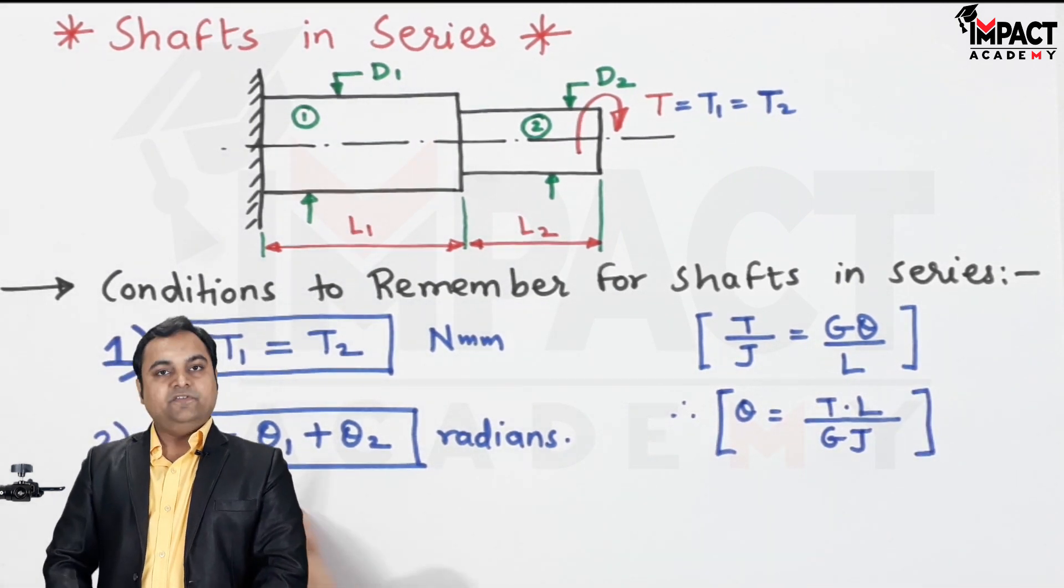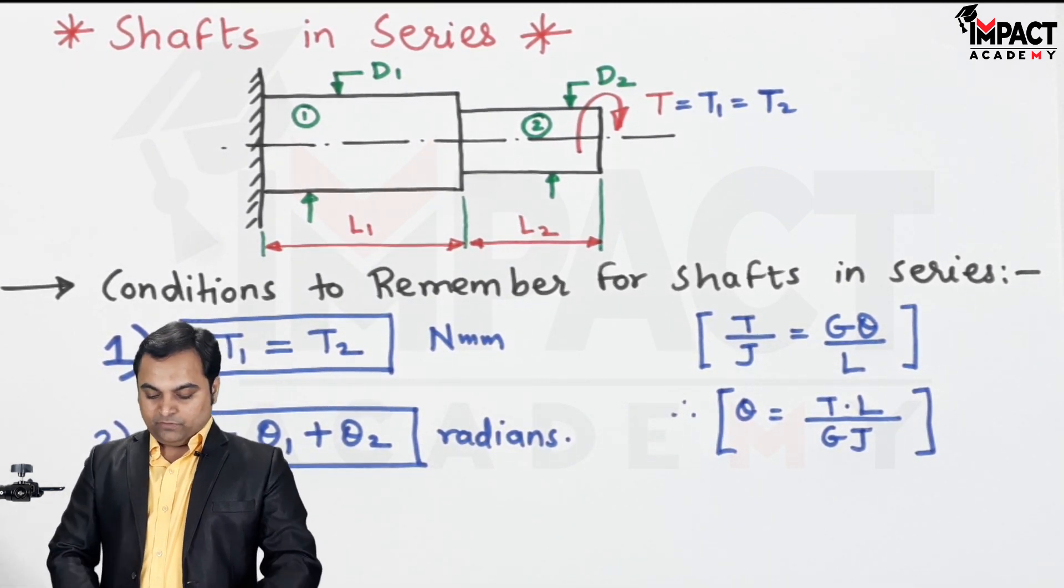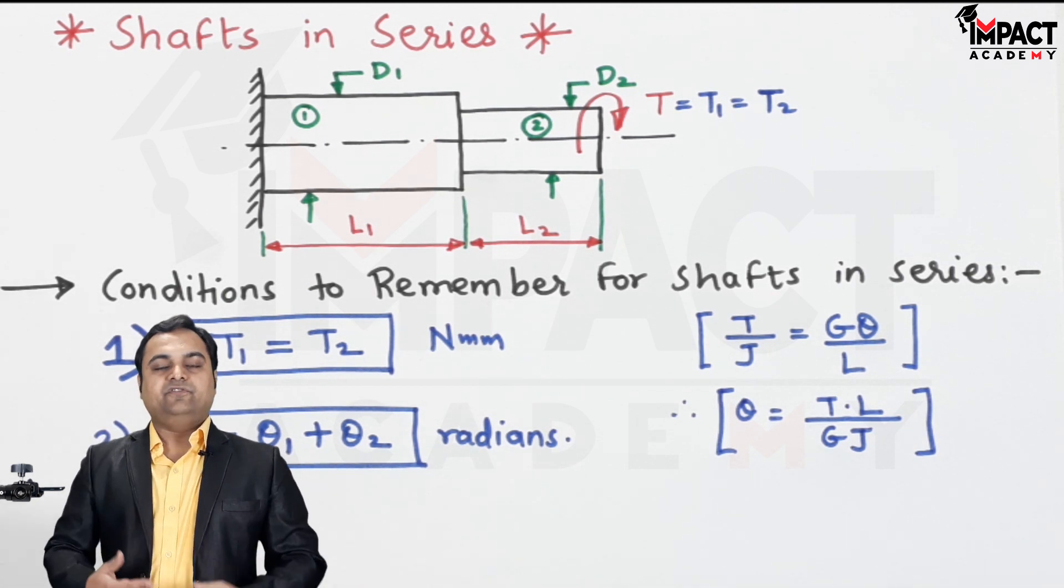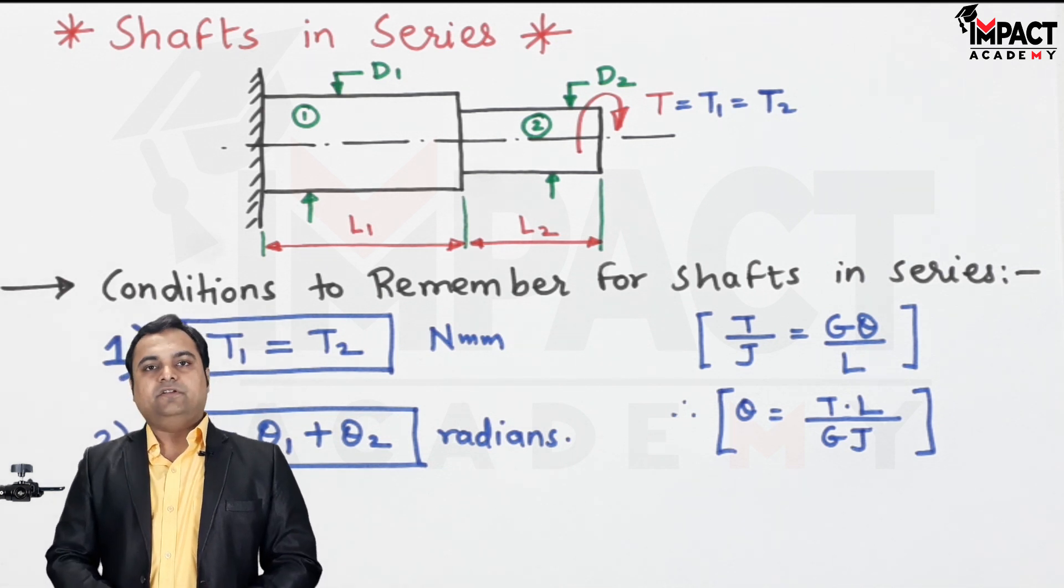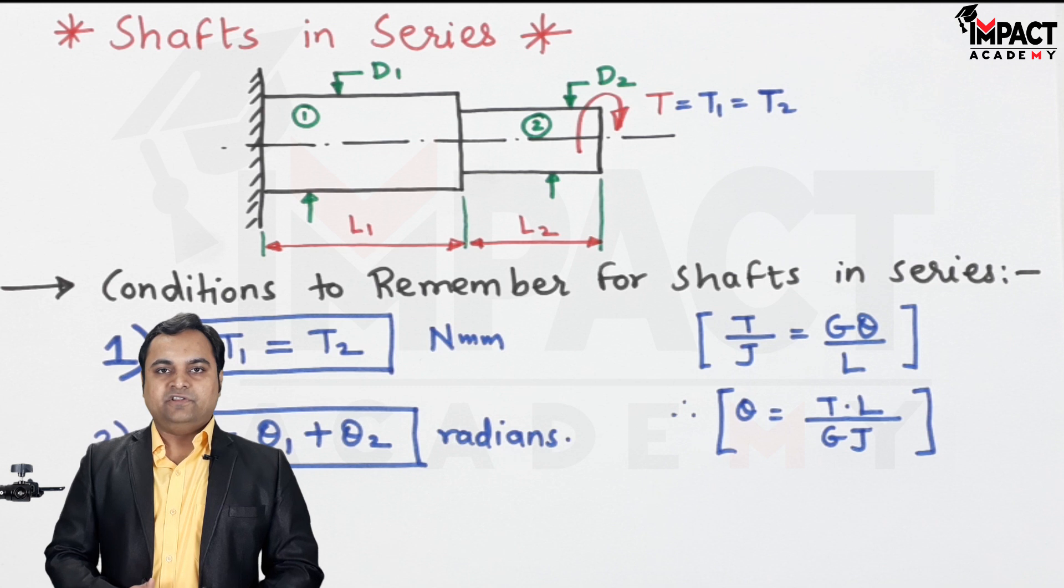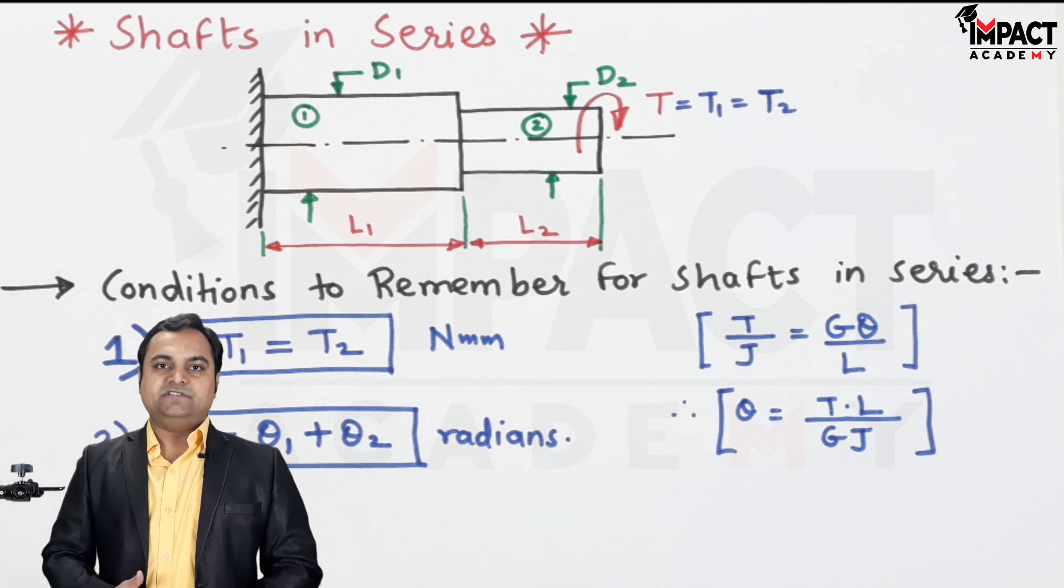So respectively, we can put the values for theta 1 and theta 2. Whenever we have shafts which are connected lengthwise in series, also called as stepped shaft, the torque is equal for all the shafts and the angle of twist gets added.